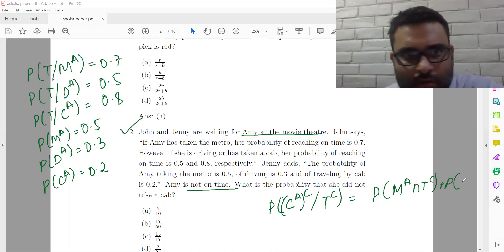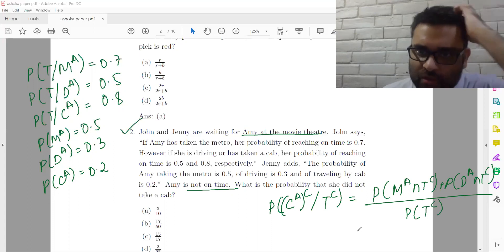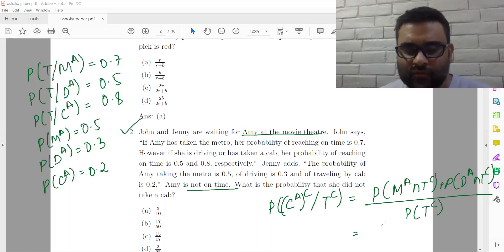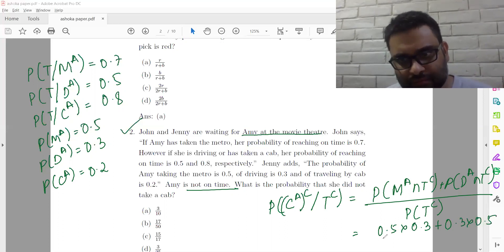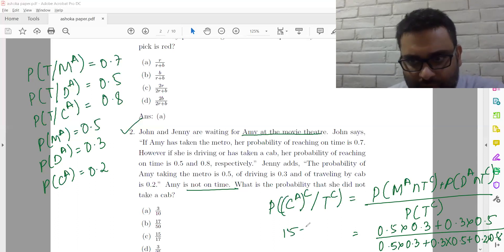So probability that Amy took the metro and not on time will be basically 0.5 into 0.3. This will be 0.3 into 0.5. So not on time can happen with metro, cab, driving or cab. So if I multiply, this will be 15 plus 15 divided by 15 plus 15 plus 16. So this will be 30 by 46.